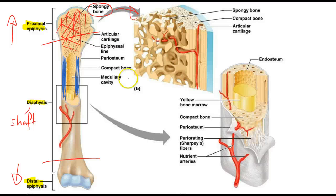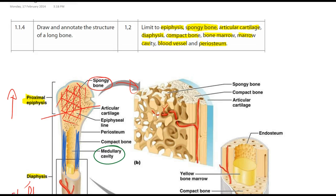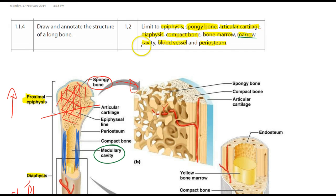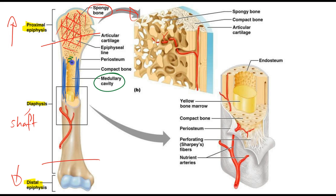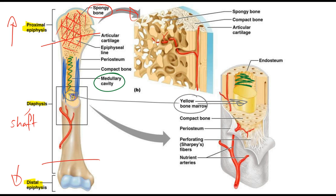We have our medullary cavity, or what's referred to here as a marrow cavity. This area in the bone, as can be seen through here, is the area where our yellow bone marrow sits.